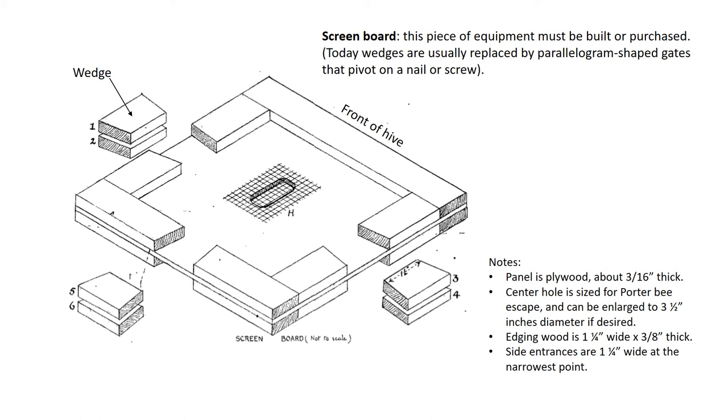The wedges and openings are numbered one through six. The side facing the front of the hive is not notched. A center hole is cut the size of a Porter bee escape. However, he states that if this screen board is only to be used for swarm control, then the center hole can be round and up to three and one-half inches in diameter. The hole is covered by a piece of wire mesh with openings small enough to prevent bee passage.